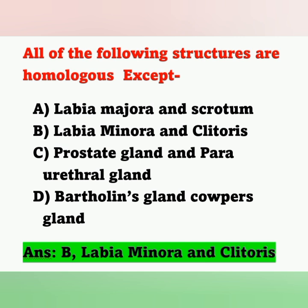So in our options, Option B is the correct answer — Labia Minora and Clitoris. Labia minora in the female is homologous to the penile urethra in the male, not to the clitoris. The remaining options — Labia Majora and Scrotum, Prostate Gland and Paraurethral Gland, Bartholin's Gland and Cowper's Gland — are all correct homologous pairs. Option B is not homologous.